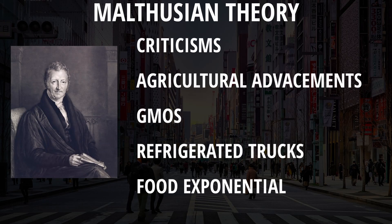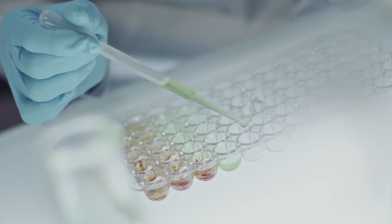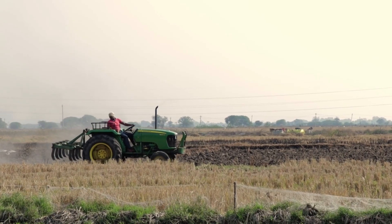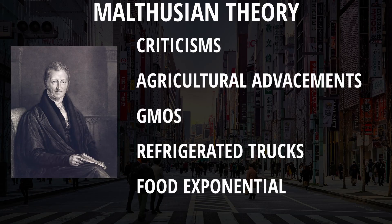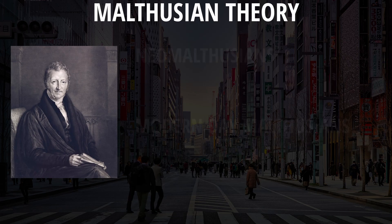There are many criticisms to Malthus's hypothesis, as this essay was written in 1789, so he had no idea of the various technological improvements we would have access to. For example, now we have various technological improvements in agriculture, such as GMOs, pesticides, and tractors that allow for mass production. We also have better transportation with refrigerated trucks, and some would even argue that food production has been exponential. However, even to this day, there are Neo-Malthusians — people who believe that Malthus is still right and could be proven right in the future.